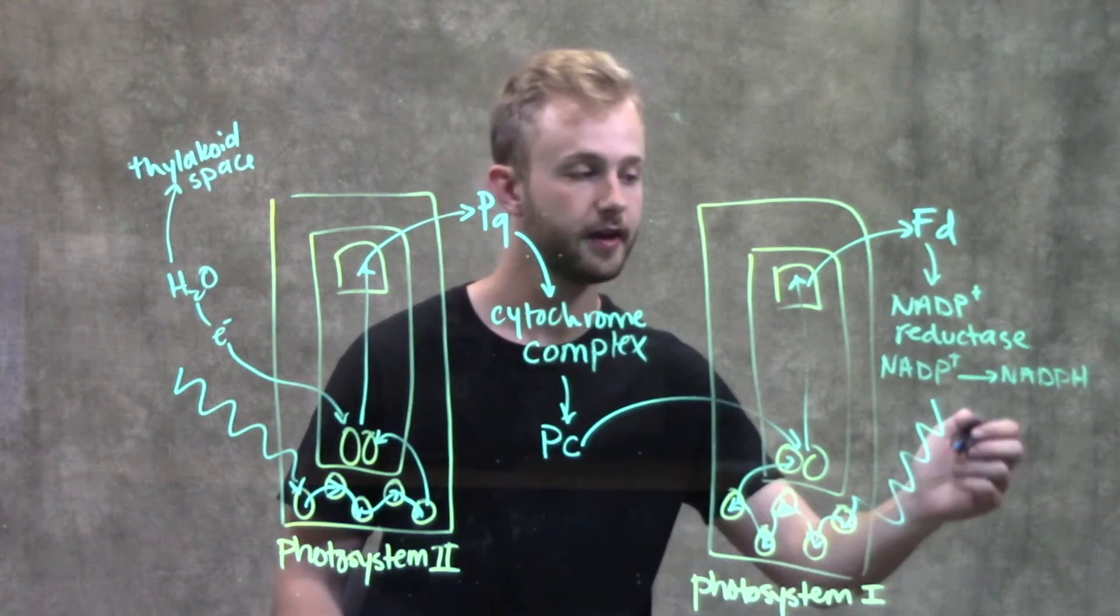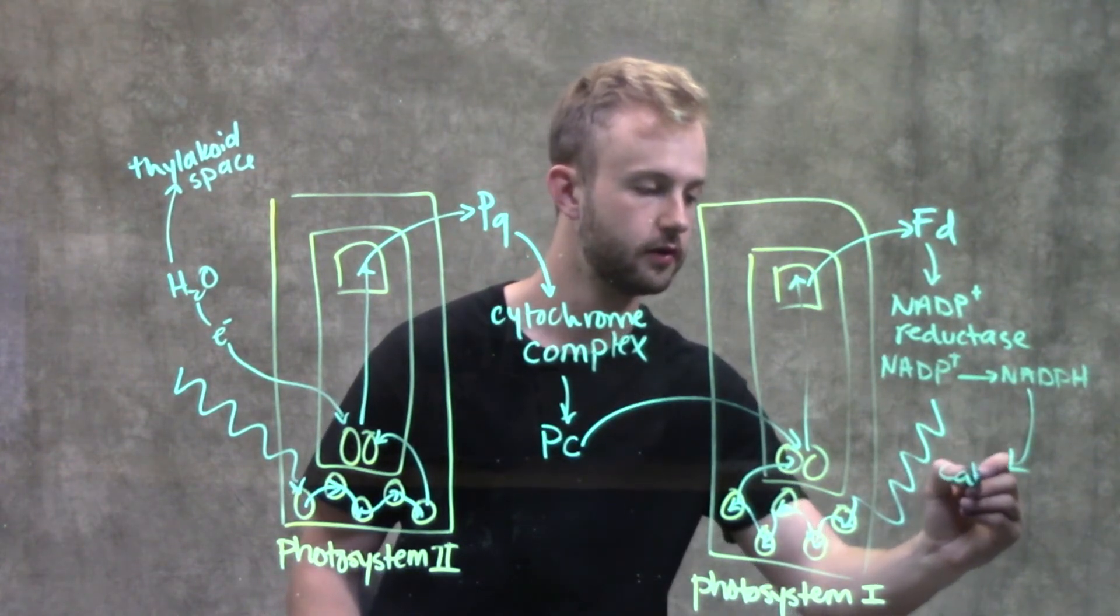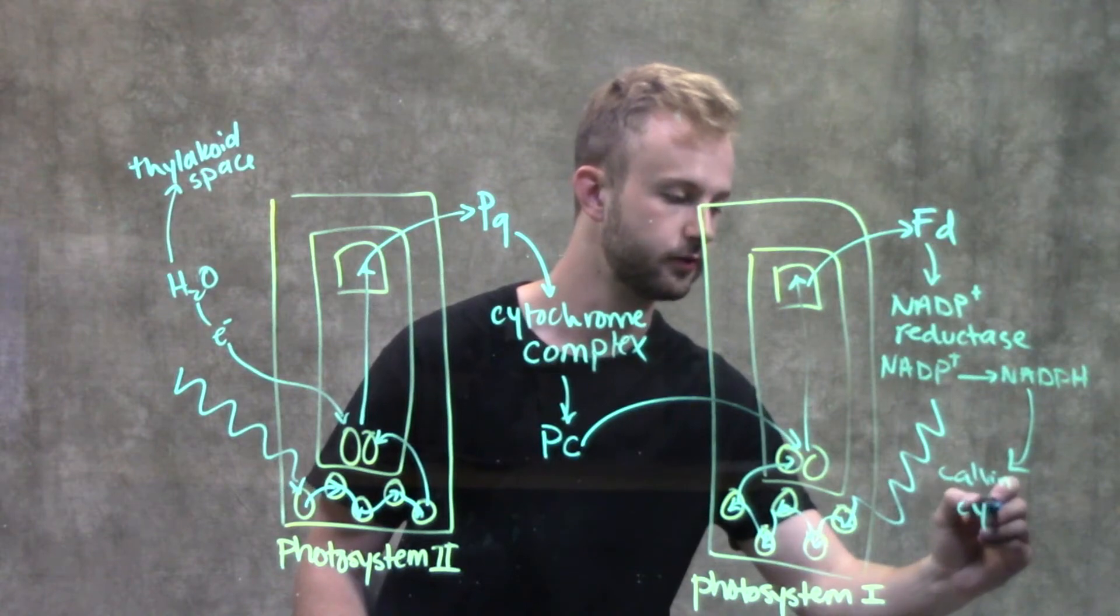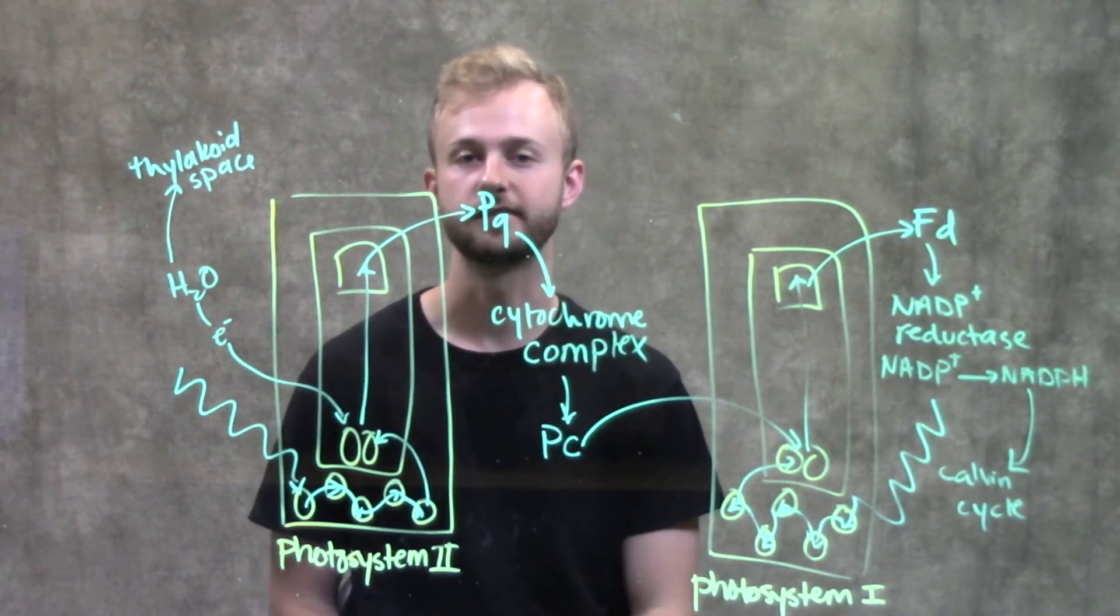This NADPH then goes to the Calvin cycle to complete the process of photosynthesis.